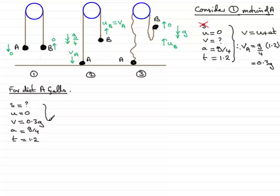So what could we use to find S? Well, there's quite a few formulas that we could use. But the one that I would prefer to use here is going to be S equals U plus V times T divided by 2. So using that, what we've got is S equals U, which is 0, plus V. So that's going to be 0.3G. And that's going to be multiplied by the time of 1.2 and divided all by 2. And if you work that out, what you find you get is 0.18G. So A falls 0.18G meters to the ground.